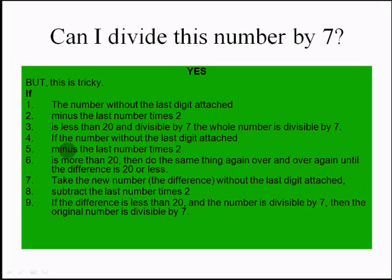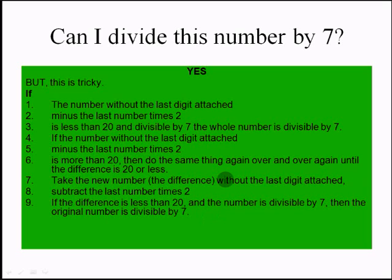If the number without the last digit, minus the last digit times 2, is more than 20, then do the same thing again over and over until the difference is 20 or less. Take the new number without the last digit, subtract the last digit times 2. If the result is less than 20 and divisible by 7, then the original number is divisible by 7.